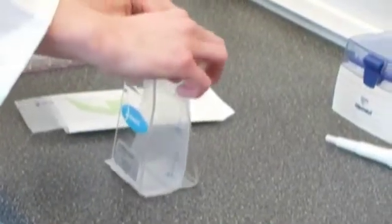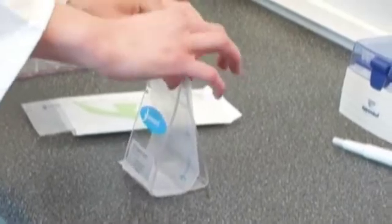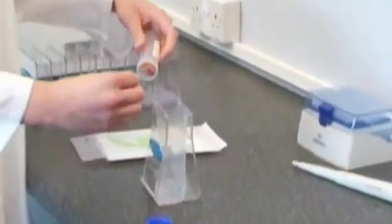The Stomacher 80 Biomaster is ideal for small samples and tissue processing. It is capable of processing samples from 5 to 80 milliliters.